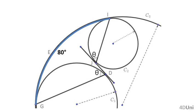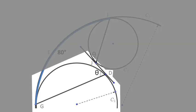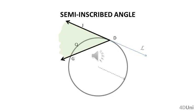For example, can we relate theta with other values in the figure? To start, let's focus on the unknown theta, which is the measure of angle GDJ. That angle is determined by the segment GD, which is a chord of circumference C1, and the straight line JD that is tangent to circumference C1 at point D. Do we know something about that type of angle? The semi-inscribed angle in a circumference is the one determined by a chord and a straight line tangent to the circumference at one end of the chord.